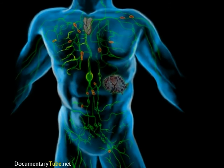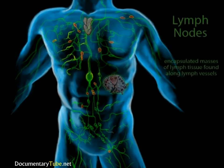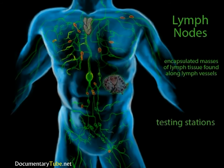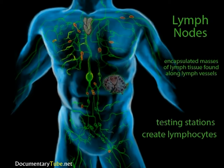Some lymph tissue is very diffuse, with no clear boundaries. You can actually feel some when you rub your lower inner lip with your tongue. Others are more organized into groups, and these are called lymph nodes. Lymph nodes have three functions. First, they are testing stations — they monitor the blood by receiving samples of the blood plasma. Second, if the sample is rife with foreign invaders, they produce lymphocytes and send them into the bloodstream to try to destroy those invaders. In addition, the lymph nodes filter the lymph so they can only return clean fluid back to the blood.